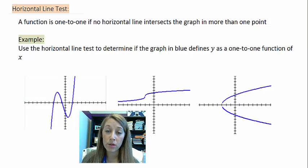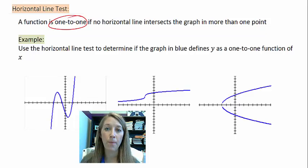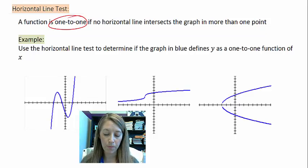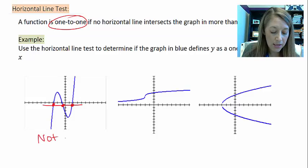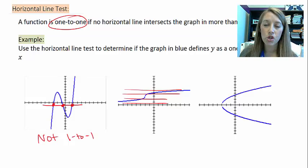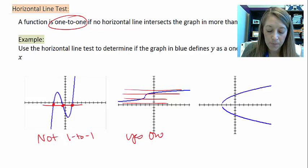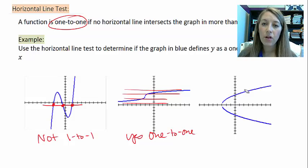This translates into a horizontal line test when we're looking for whether a function is one-to-one. If it's a function, it must pass the vertical line test. If it's one-to-one, it also has to pass the horizontal line test, which works the exact same way: if I can draw a horizontal line and it intersects my graph more than once, then my function is not one-to-one. Looking at the first graph, a horizontal line intersects it at three different places, so it is not a one-to-one function. The middle graph passes — I can draw horizontal lines in multiple places and they never intersect more than once, so it is one-to-one.